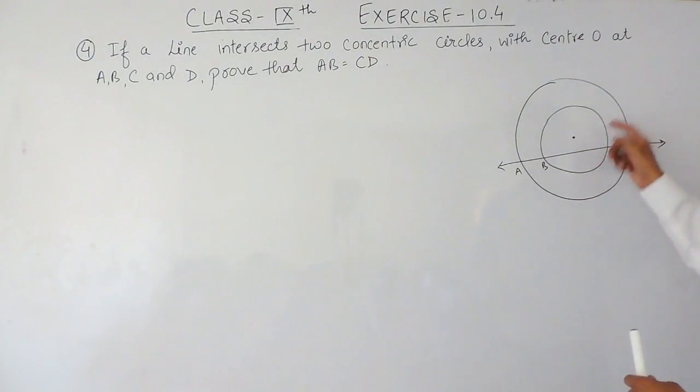So, these are the two circles and these are concentric. It means these are the two circles having the same center, the common center. And this is the line intersecting these two circles at A, B, C and D. You have to prove that the length of AB is equal to the length of CD.